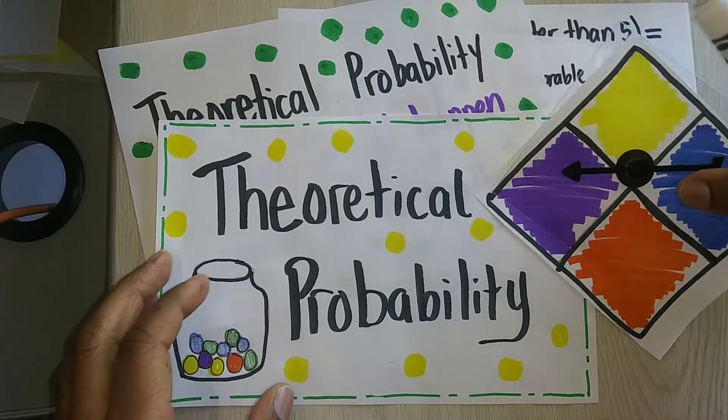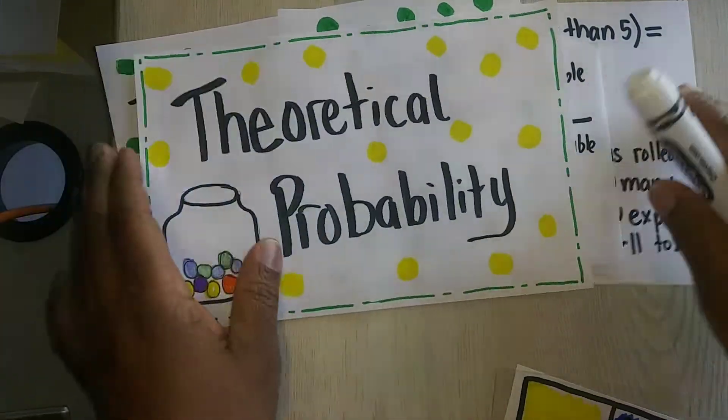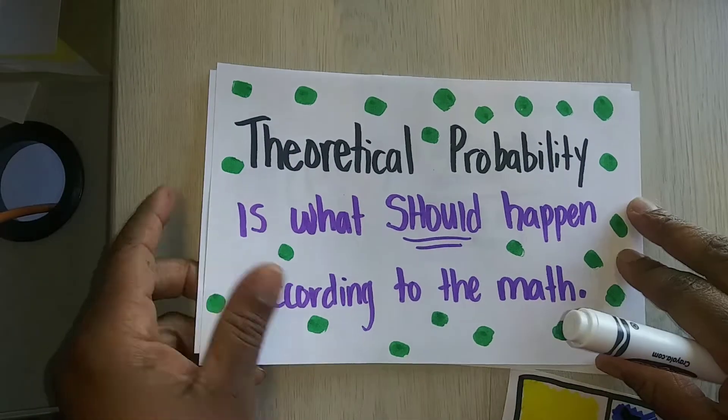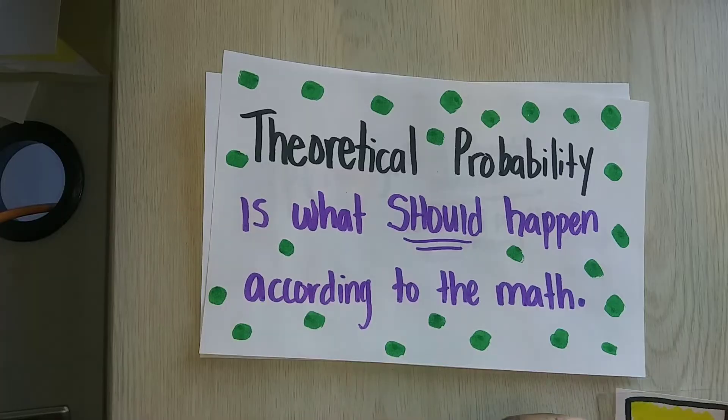In this video, we're going to talk about theoretical probability. Theoretical probability is what should happen according to math. So what should happen according to math?